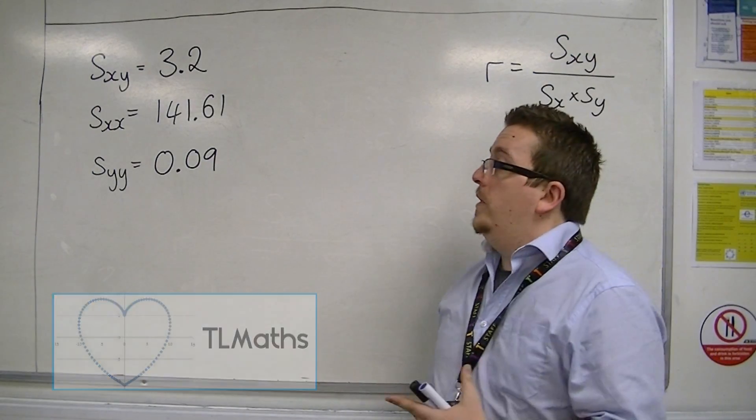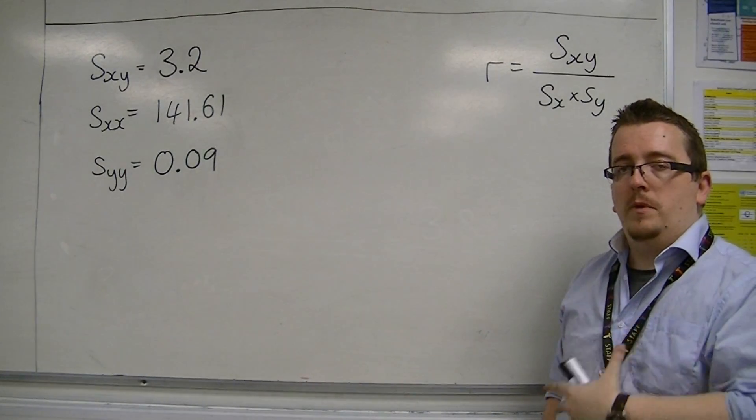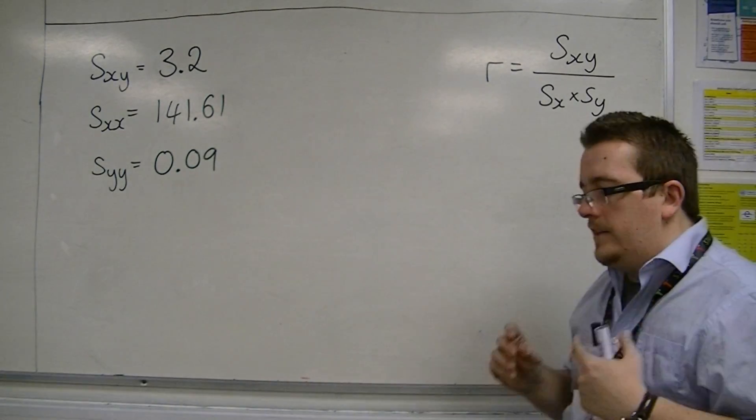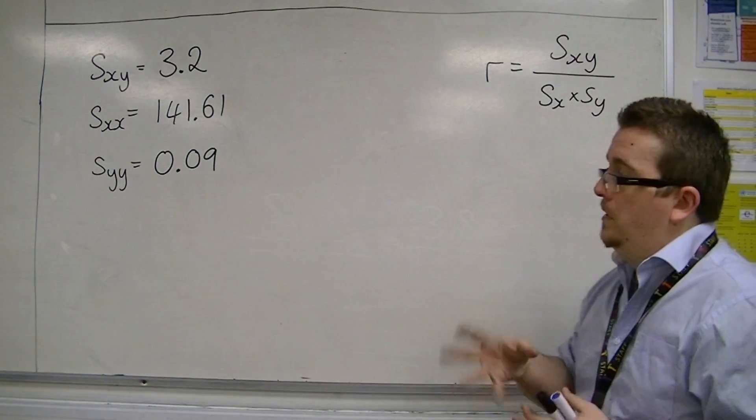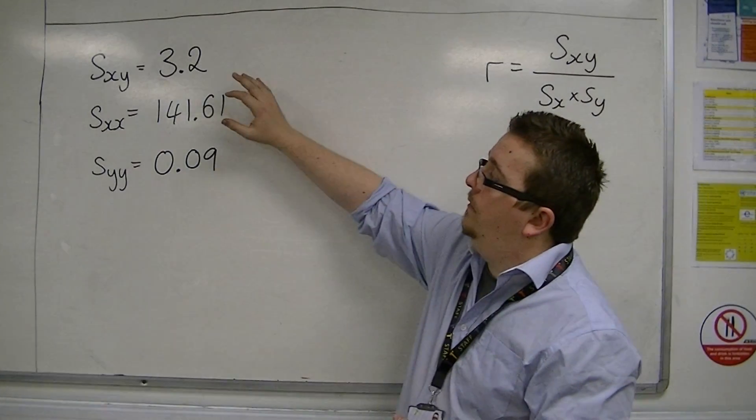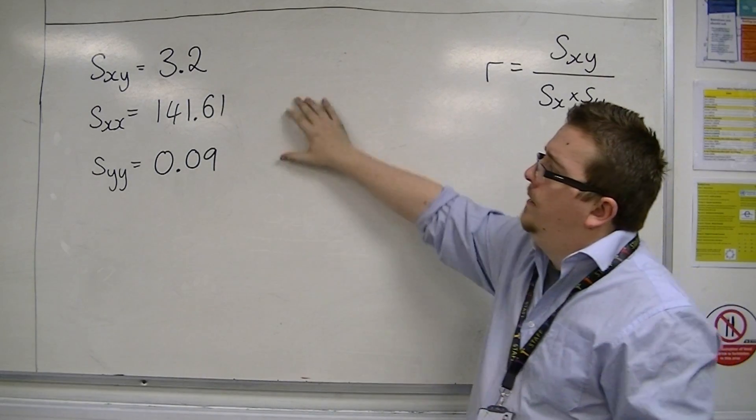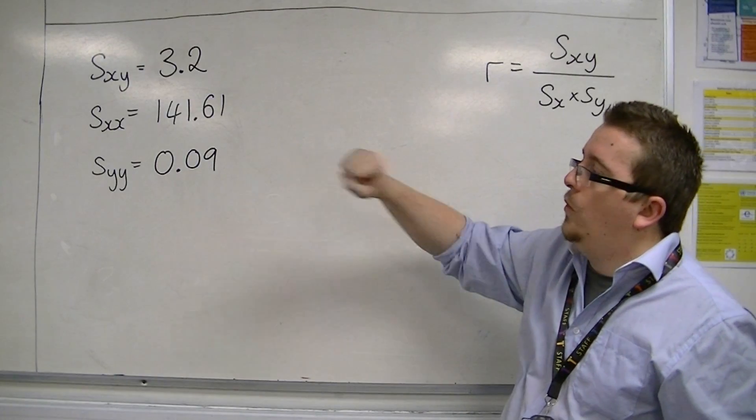In this video, we're going to be looking at continuing on from calculating the product moment correlation coefficient in the previous video. I want to highlight some key differences with notation from what you find in the formula booklet. You could be given the information to find the value of R by just giving you the values of Sxy, Sxx, and Syy.